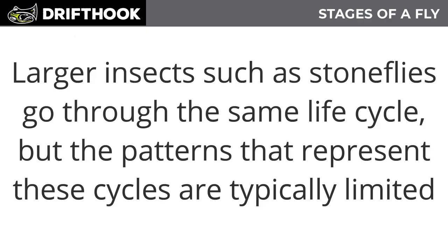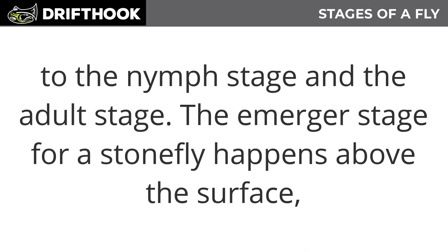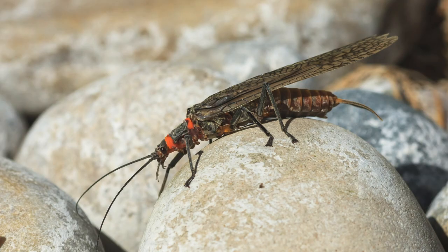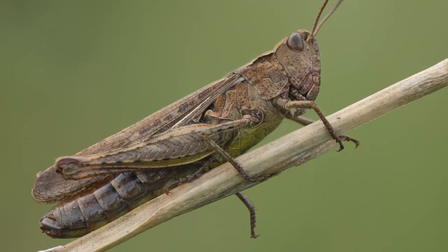Larger insects such as stoneflies go through the same life cycle, but the patterns that represent these cycles are typically limited to only the nymph stage and the adult stage. The emerger stage of a stonefly happens above the surface, where they let the sun air dry off their wings before flying. Because they are born on land, terrestrials typically make it to the water for the fish during the adult stage.